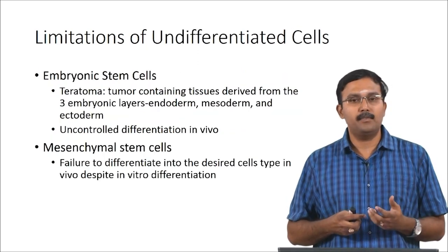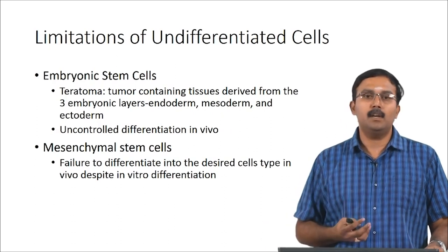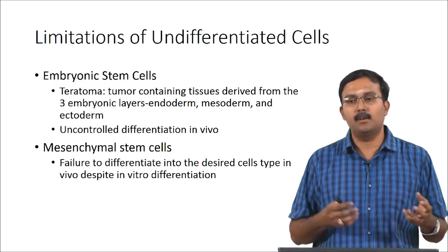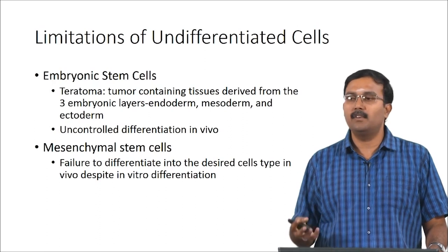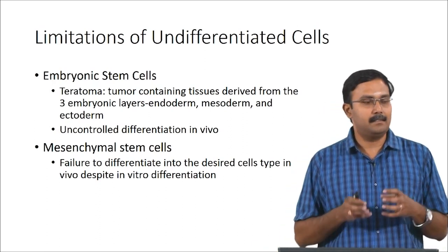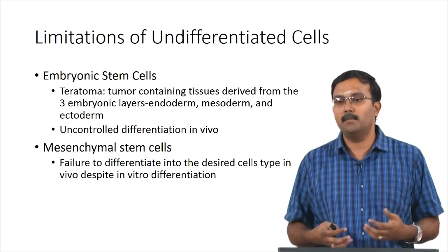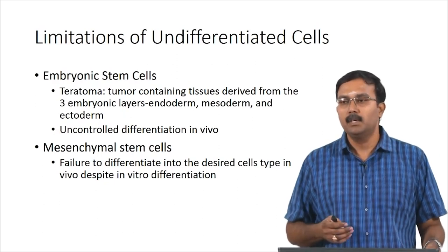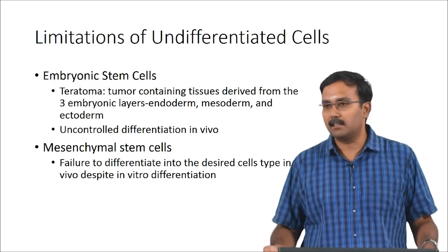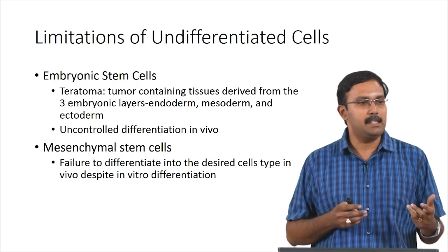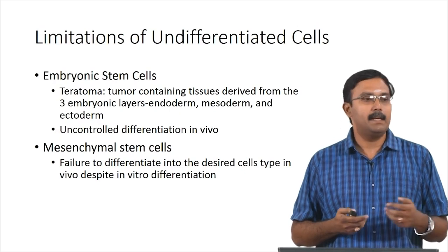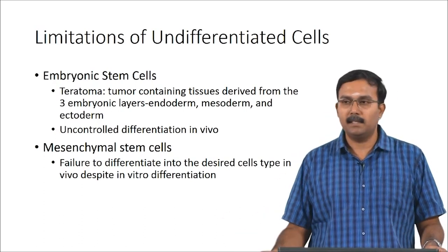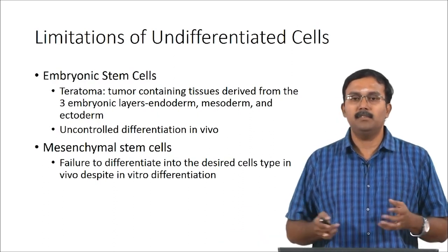With respect to undifferentiated cells, the limitations are different for each type. With embryonic stem cells there is a chance of teratoma formation — a tumor containing tissues derived from all three embryonic layers: endoderm, mesoderm, and ectoderm — and a chance of uncontrolled differentiation in vivo. There are also technical difficulties and ethical questions with embryonic stem cells. Mesenchymal stem cells fail to differentiate into desired cell types in vivo even though in vitro differentiation is very successful. Many times, people use stem cells, expand them, differentiate them in vitro, and then place them at the implantation site.